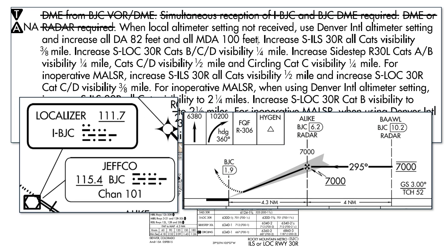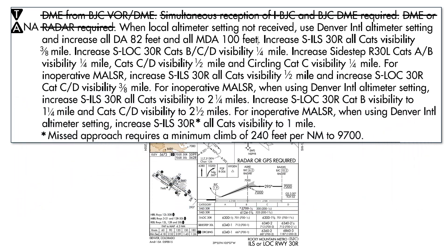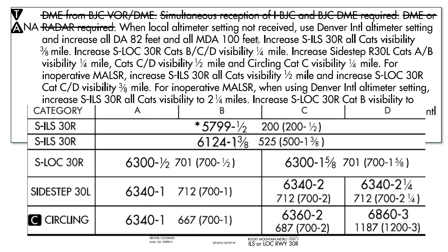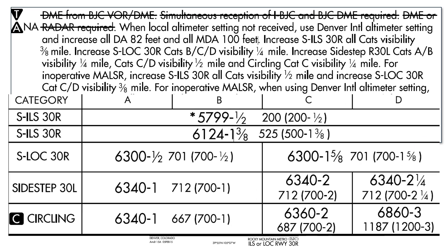The next several notes deal with changes to the minimums section. First, we deal with what happens when we can't get a local altimeter report — we need to use the nearby Denver International setting. If we do that, though, we need to increase our minimums. The decision altitudes, those are the minimums on the ILS approach, go up 82 feet. Notice there are two figures for ILS: one will go to 5,881 and another to 6,206. The first one has an asterisk, which we'll address in a second.